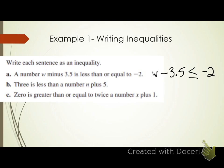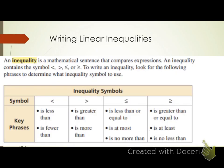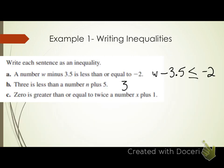Letter B: '3 is less than a number N plus 5.' 3 comes first, then the less than symbol, then N plus 5: 3 < N + 5.